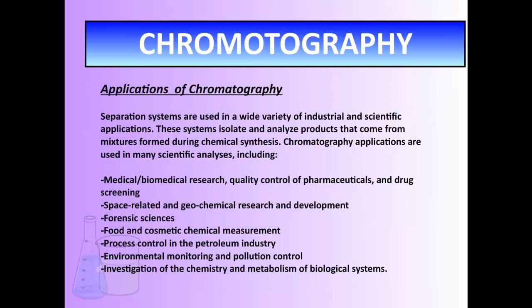What is chromatography used for? It's used for medical and biomedical research, where they look at pharmaceuticals and want to know what's in something. Forensic scientists use chromatography quite a bit. It's used in space-related and geochemical research and development, where they want to know if something is a pure substance or a mixture. It's used in the oil industry, environmental monitoring — what's in the water, is it pure? — and investigation of chemistry and biological systems. So chromatography is a process we use quite frequently, and it's actually a quite cool process.